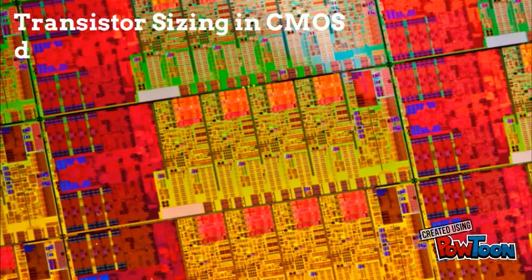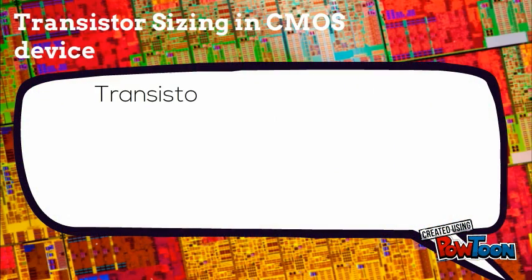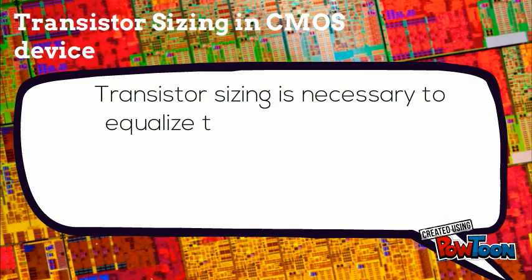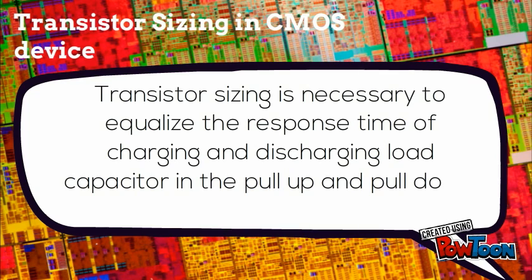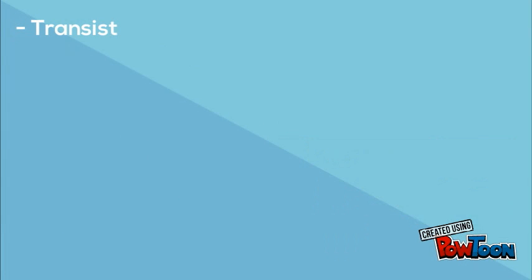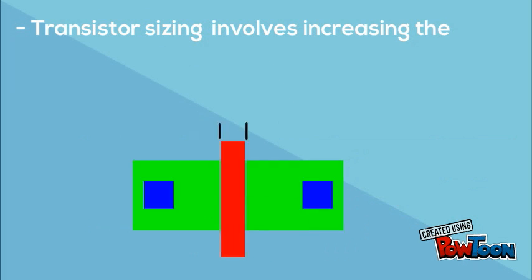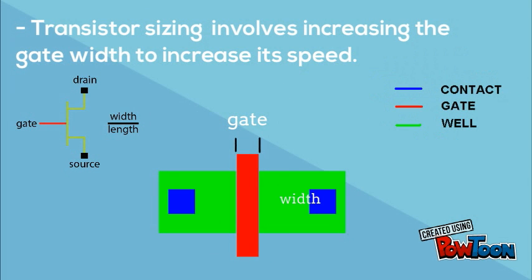Transistor sizing in a CMOS device is necessary to equalize the response time of charging and discharging a load capacitor in the pull-up and pull-down networks. Transistor sizing involves increasing the gate width to increase its speed.